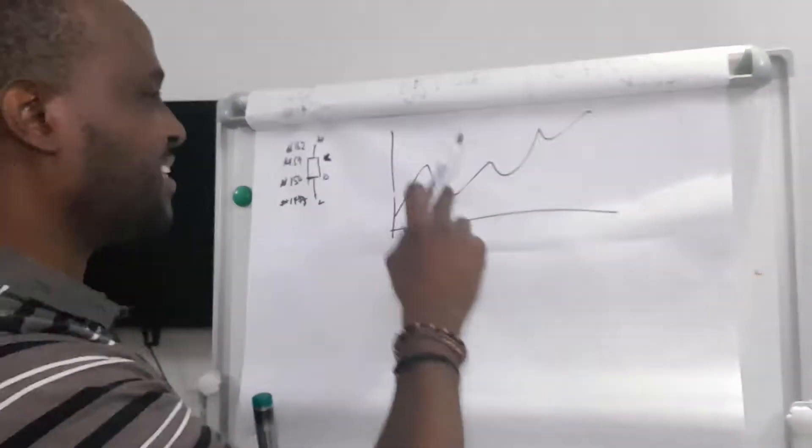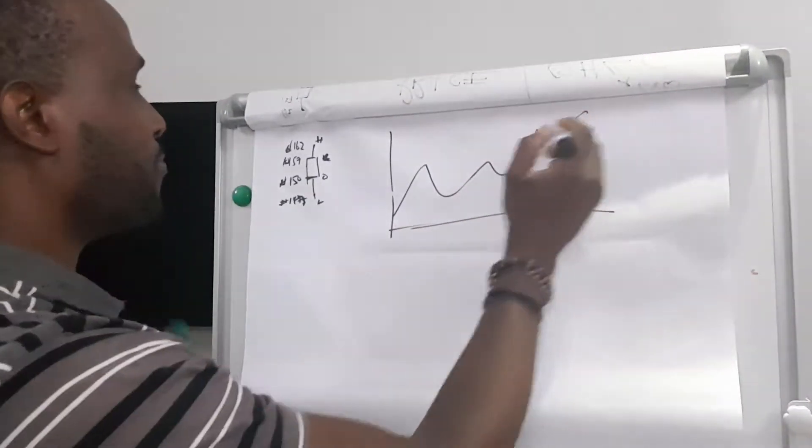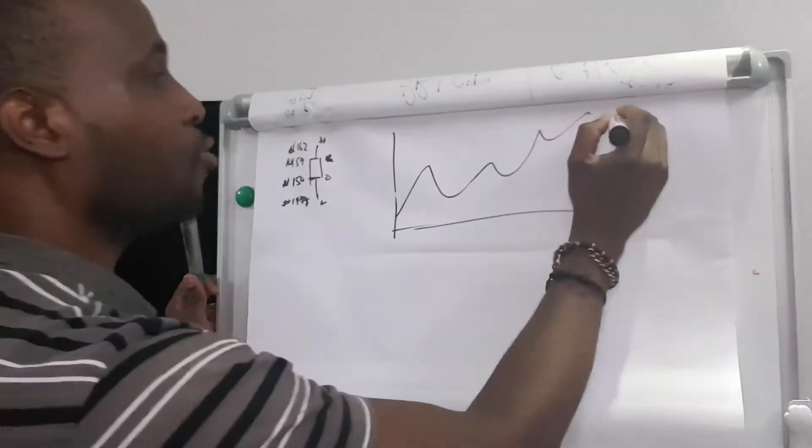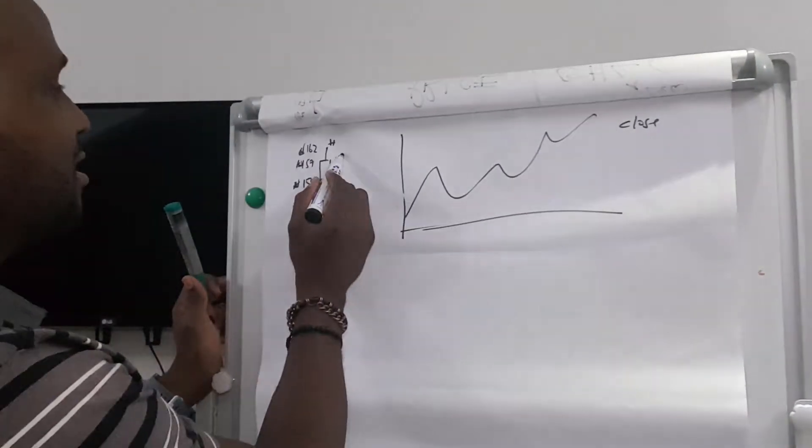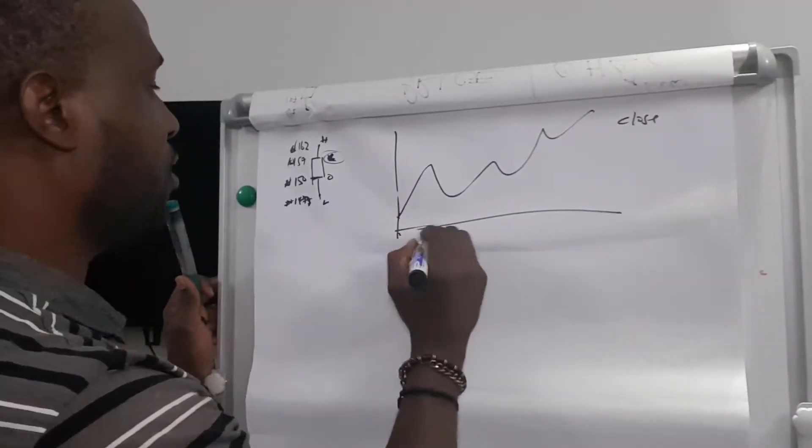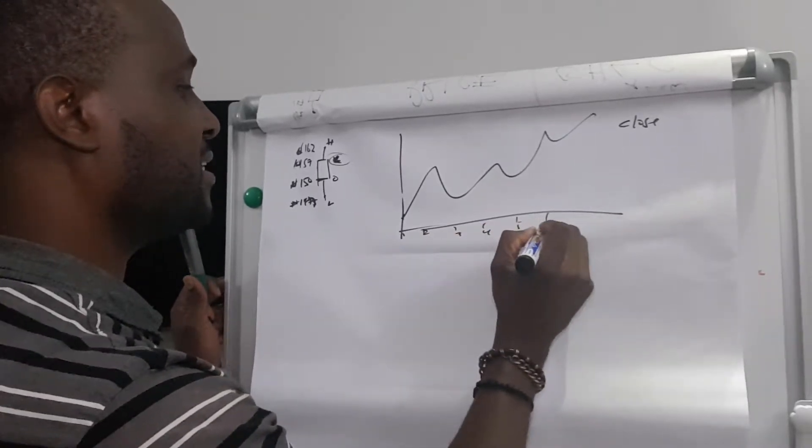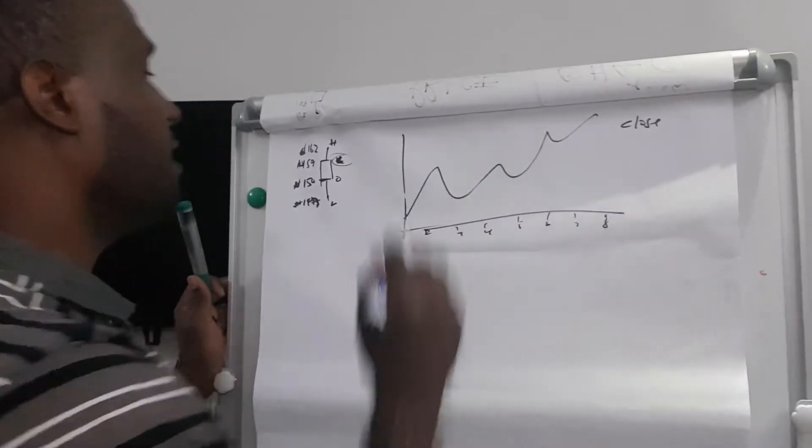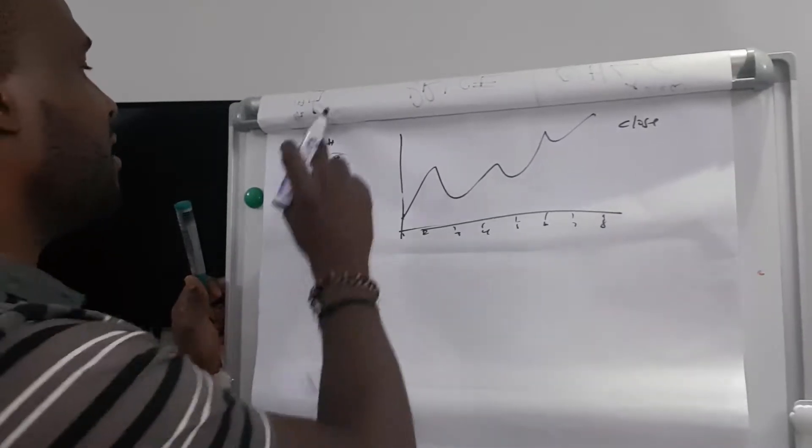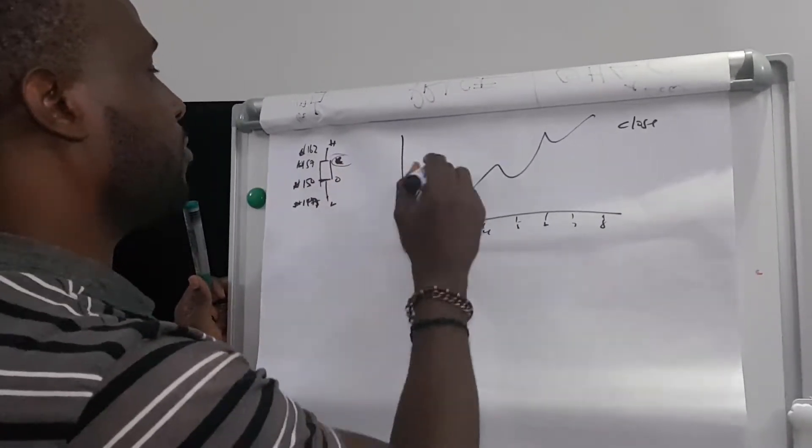These are lines and this represents only the close of the price. So they take only the close and they plot it on day one, day two, day three, day four, day five, day six, day seven, day eight. Every single day they only take the close price and they plot it onto a graph and we get lines like this.